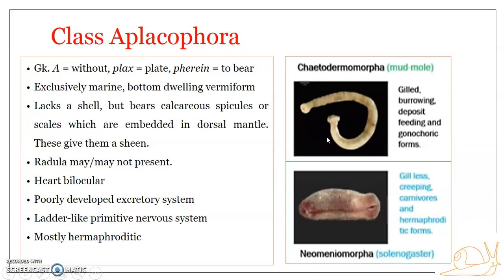Looking into other structures, they are vermiform — long and narrow — bilaterally symmetrical, but with a poorly developed head region. However, the mantle and foot are usually well-differentiated. The head region is not highly defined. The body is completely covered by a skin supported by numerous minute calcareous spicules or scales.